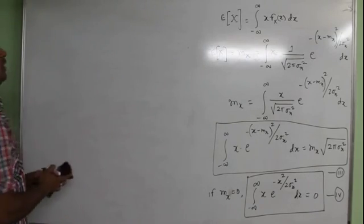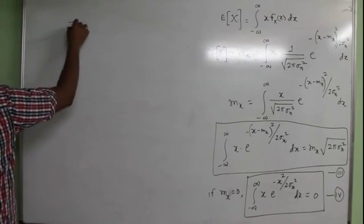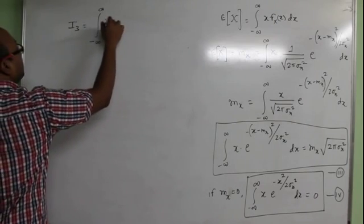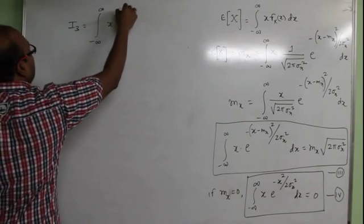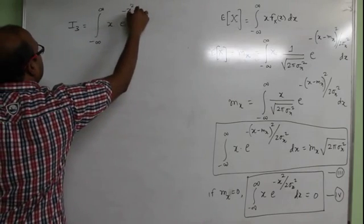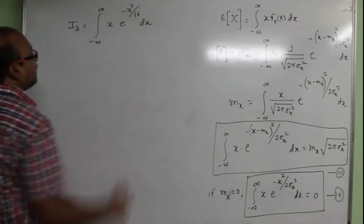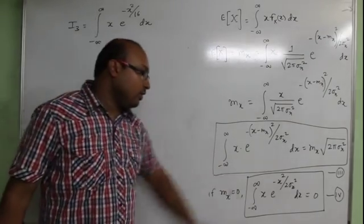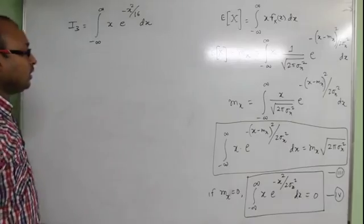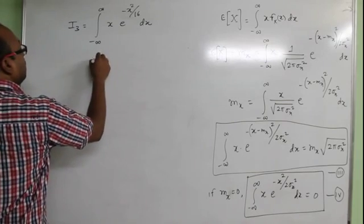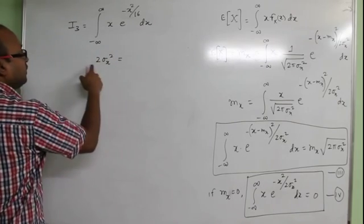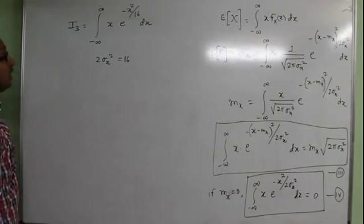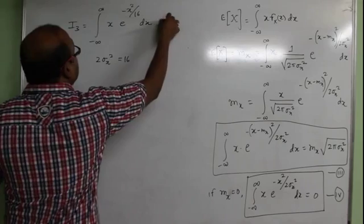Suppose we have to find the value of an integration in the form of the integral of X times e to the power minus X squared divided by 16. This expression is in the form of equation 4. By comparison, 2 sigma_X squared equals 16, and the value of the integration is 0.